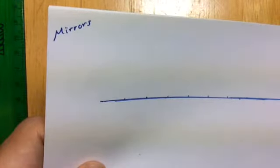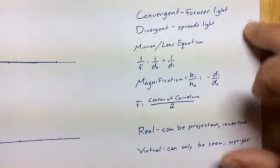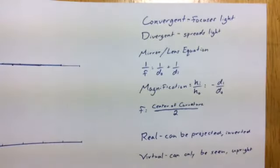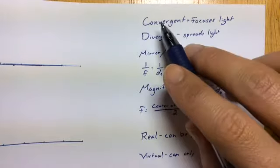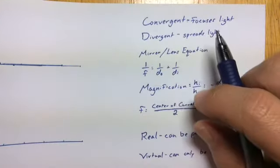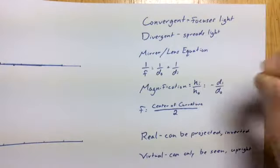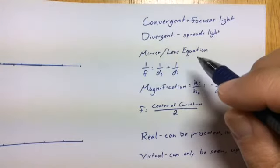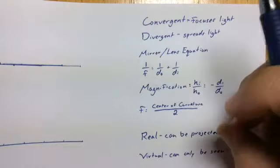Let's talk about mirrors and ray tracing. There are some terms you need to know from mirrors, and these apply to lenses as well. First, convergent means that light gets focused down by an optical device, like a magnifying lens — anytime light goes down to a point. Divergent is the complete opposite: light that hits the device is spread apart, never coming down to one point.